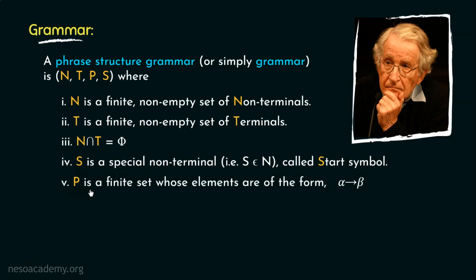Finally, P is a finite set whose elements are of the form alpha can be written as beta, where alpha and beta are the strings over N union T. Meaning, they may be a mixture of non-terminals and terminals, or only non-terminals, or only terminals. Nevertheless, alpha must have at least one non-terminal, because we already have seen, without a non-terminal, we cannot generate anything. And also, the elements of P are called production rules.